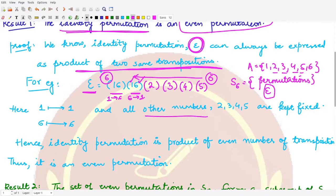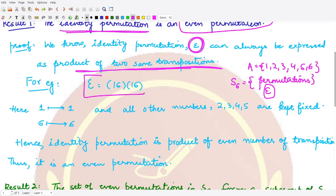So 1 goes to 1, 6 goes to 6, and all the other numbers 2, 3, 4, 5 are kept fixed because they are 1-cycles not written in the given permutation. Therefore, we are able to write this identity permutation in terms of 2 transpositions. Since 2 is an even number, this ε, which is the identity permutation, is an even permutation. This is what we wanted to prove.